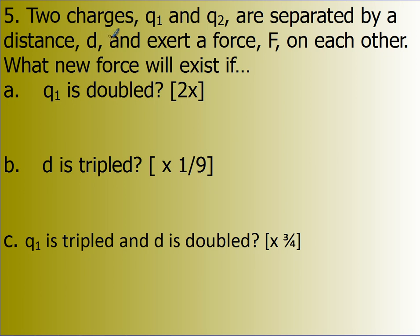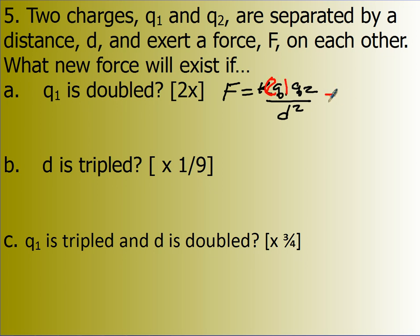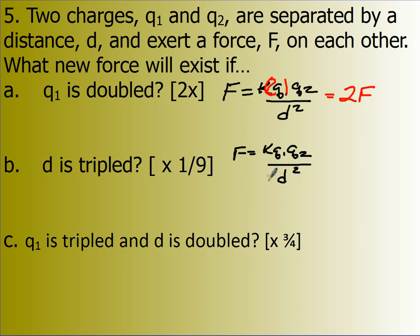Now, if I have two charges separated by a distance D exerting a force F, what will the new force be if Q1 is doubled? F equals K Q1 Q2 divided by D squared. If the first charge gets doubled, you wind up with twice the force. Now what if D is tripled? F equals K Q1 Q2 divided by D squared. If I triple D, I wind up with one over three squared, or one ninth, my original force.